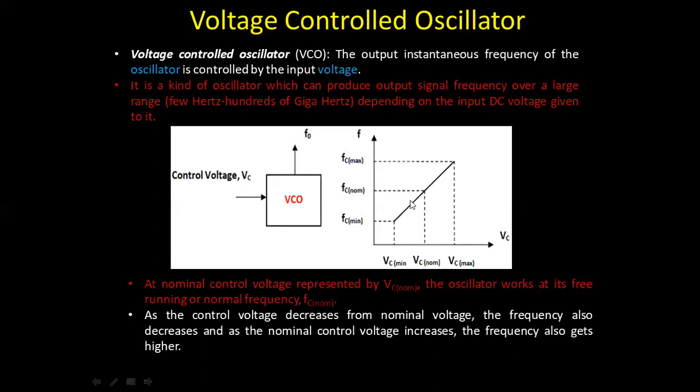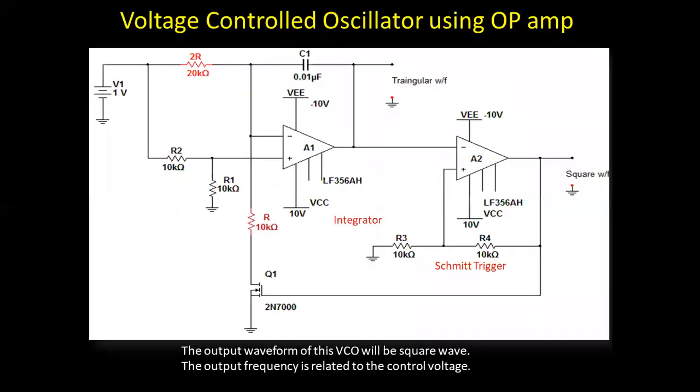As the control voltage decreases from the nominal voltage, the frequency also decreases; as it increases, the frequency increases. So the maximum and minimum frequency range is given by the minimum and maximum control voltage. Now let's look at the circuit — this is a Voltage Controlled Oscillator using an op-amp.